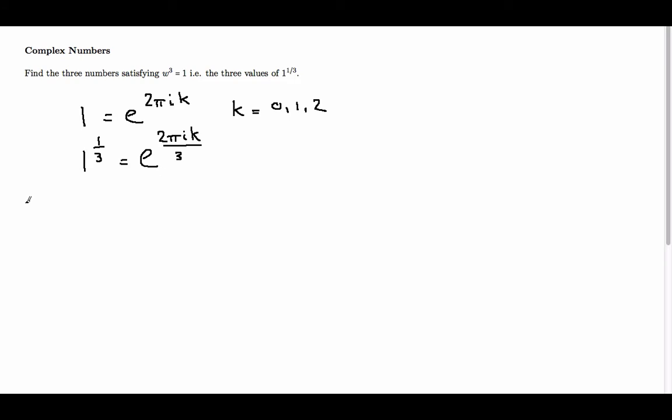So our first solution is when k is equal to 0. And when k is equal to 0, I get e to the 2 pi i k times 0 over 3, which is equal to e to the 0, which is 1, which is what we were expecting.